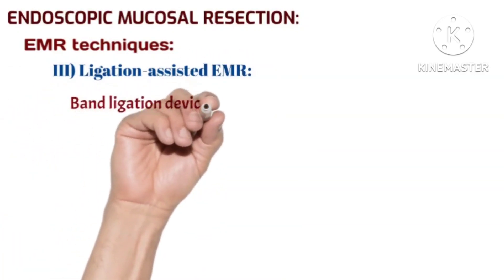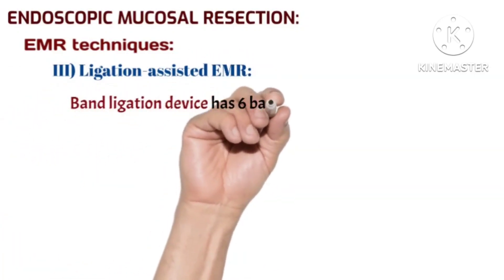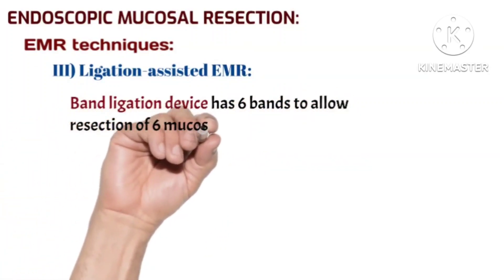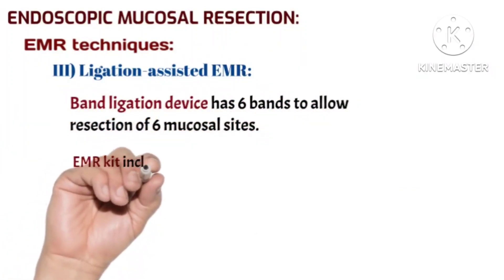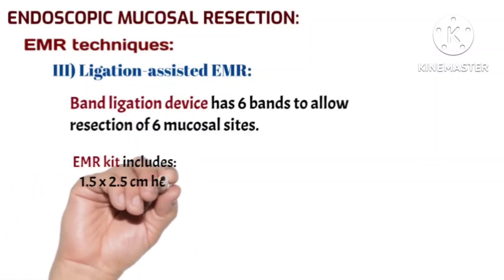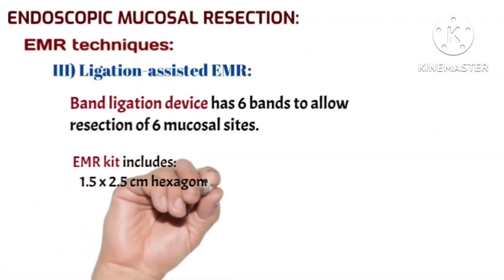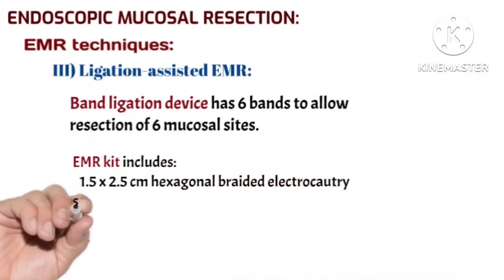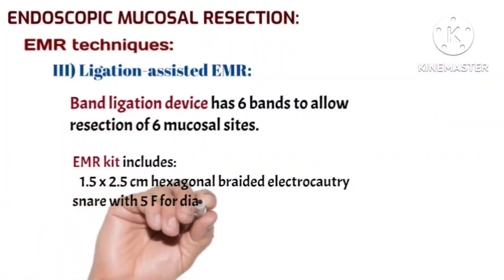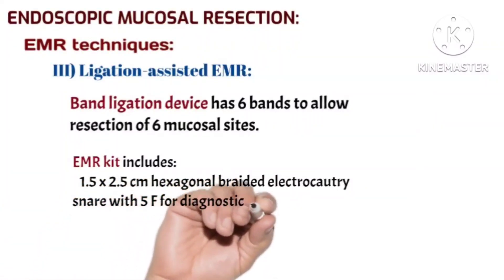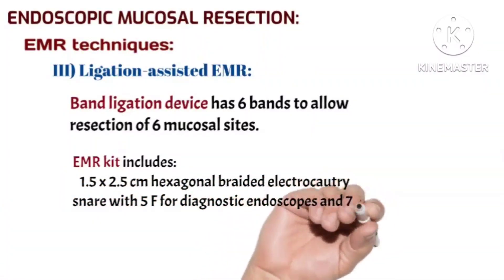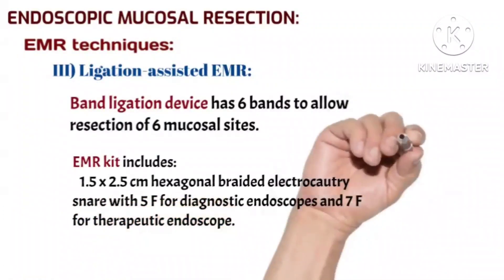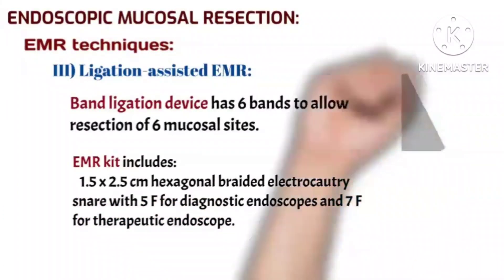The band ligation device has six bands to allow resection of six mucosal sites. The endoscopic mucosal resection kit includes a 1.5 by 2.5 cm hexagonal braided electrocutter snare, with a five-French range for diagnostic endoscopes and a seven-French range for therapeutic endoscopes.